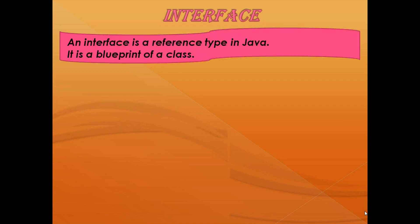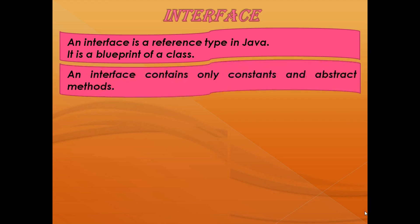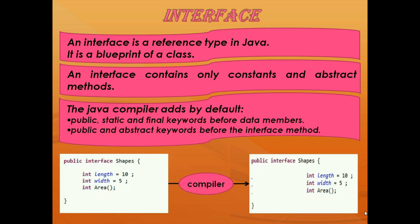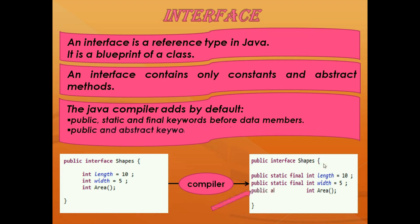So what is an interface? An interface is a reference type in Java. It is a blueprint of a class. An interface contains only constants and abstract methods. The Java compiler adds by default public, static and final keyword before the data members, and public, abstract keyword before the interface methods.